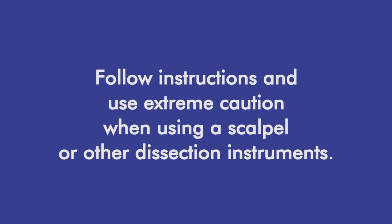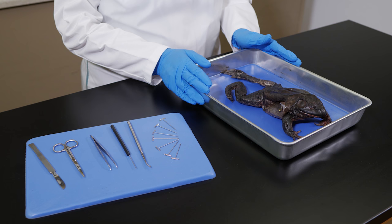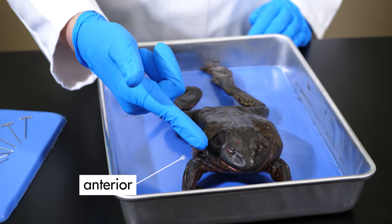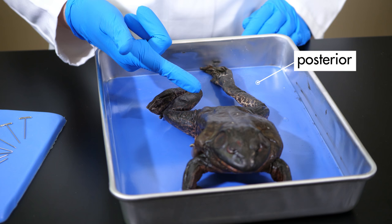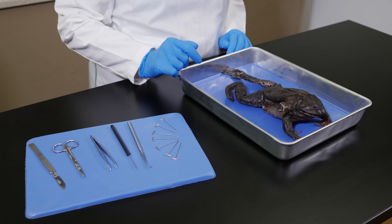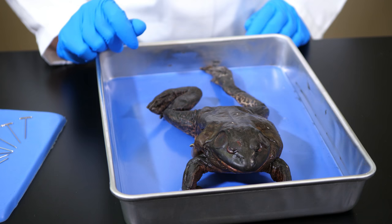Next, let's go over some terms that we will be using as we perform a dissection. The portion of the specimen that lies near the front, or head, is the anterior region. The portion of the specimen near the hind portion, or tail, is the posterior region. The terms anterior and posterior also apply to directions and relative locations.